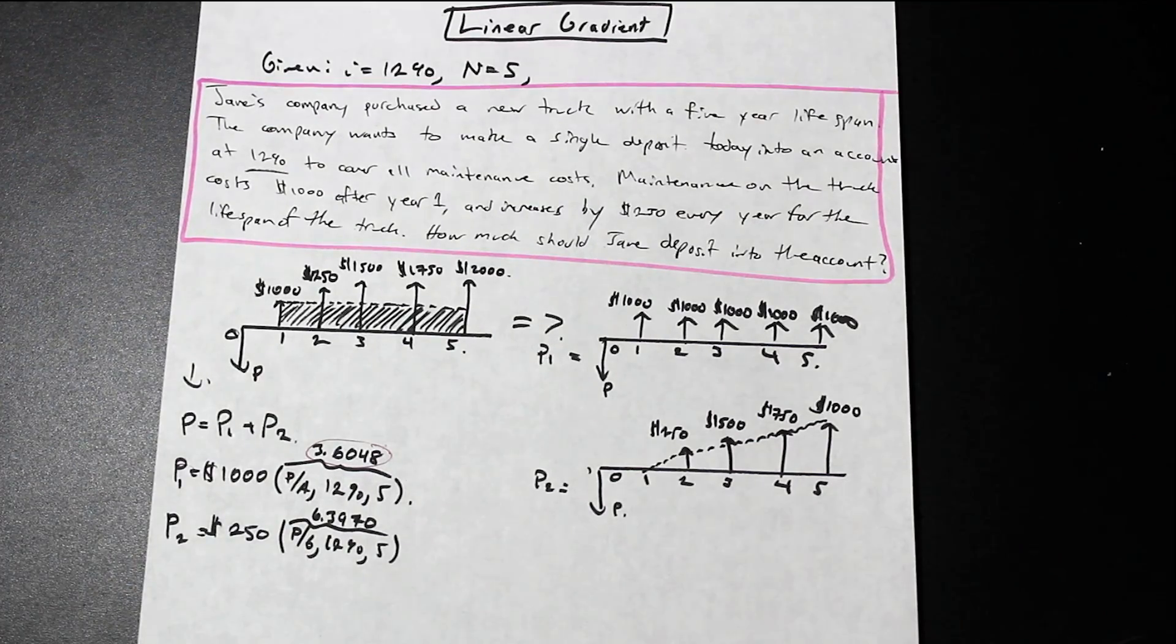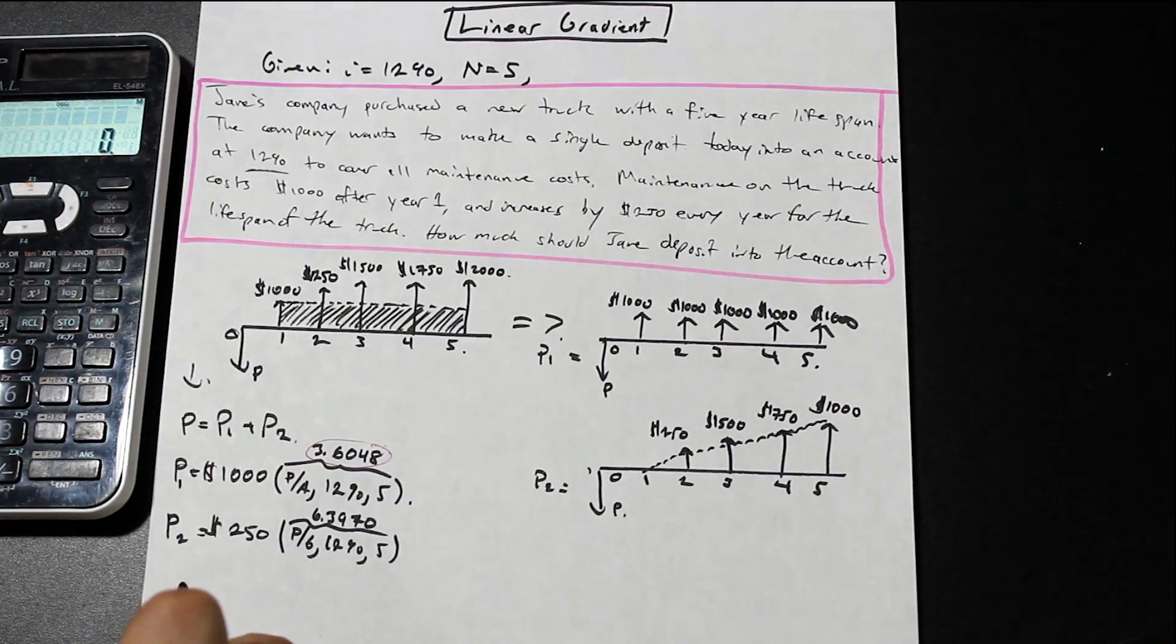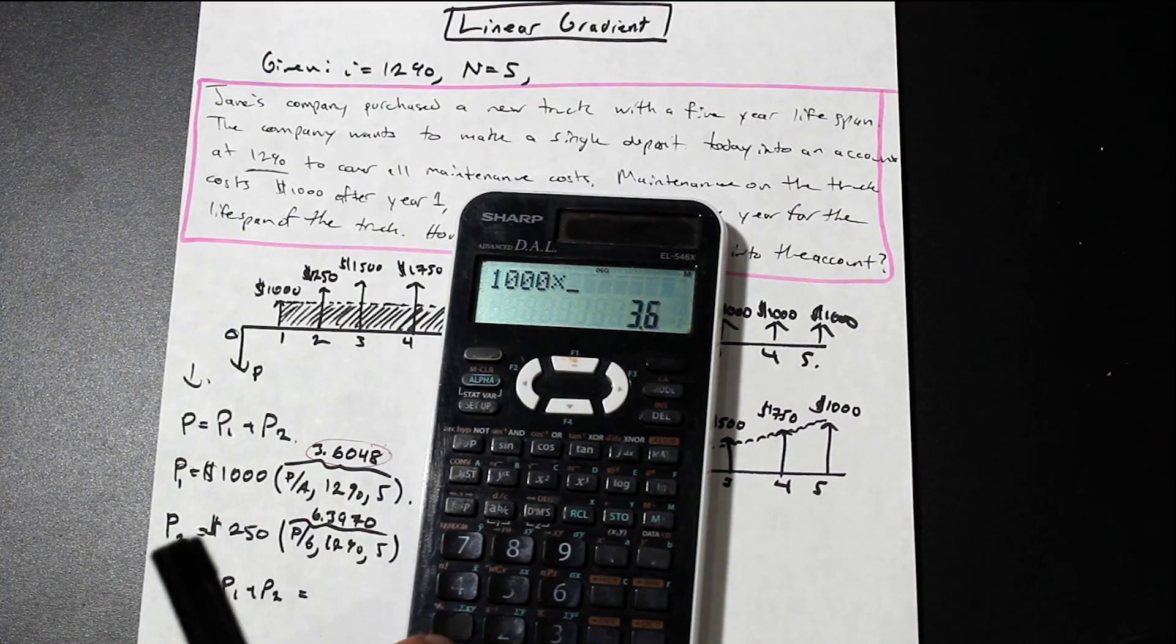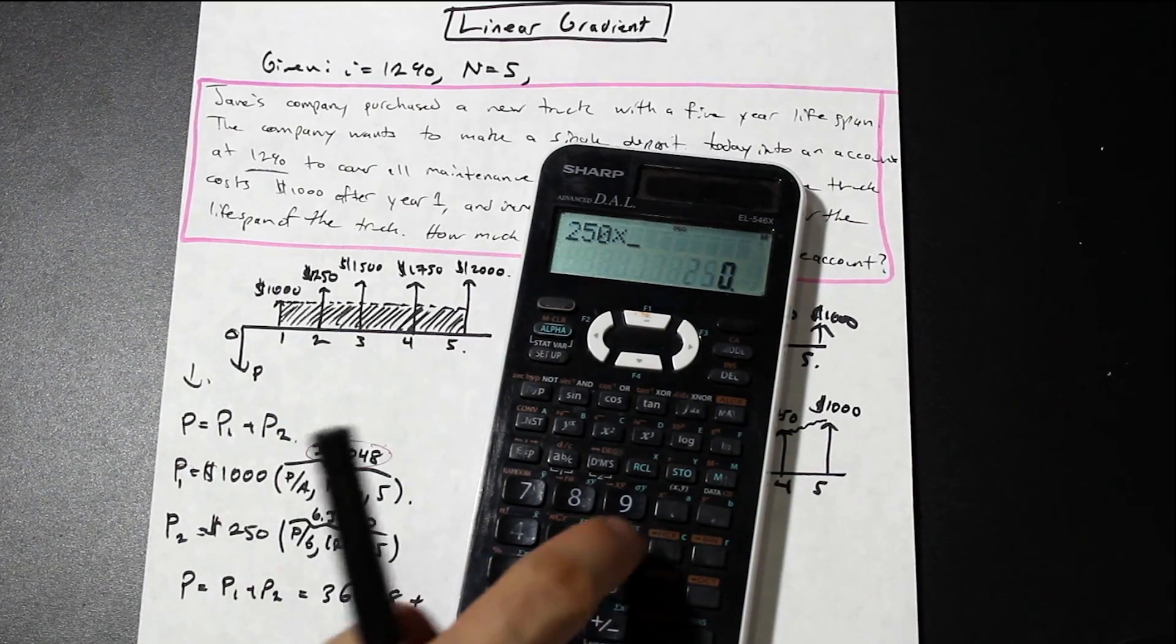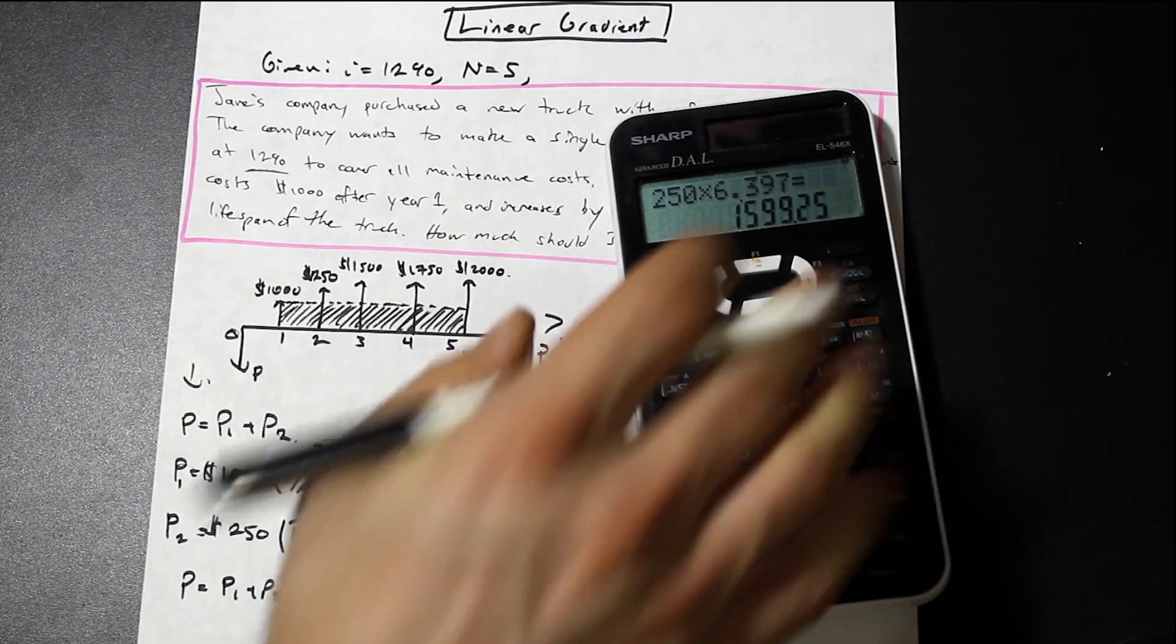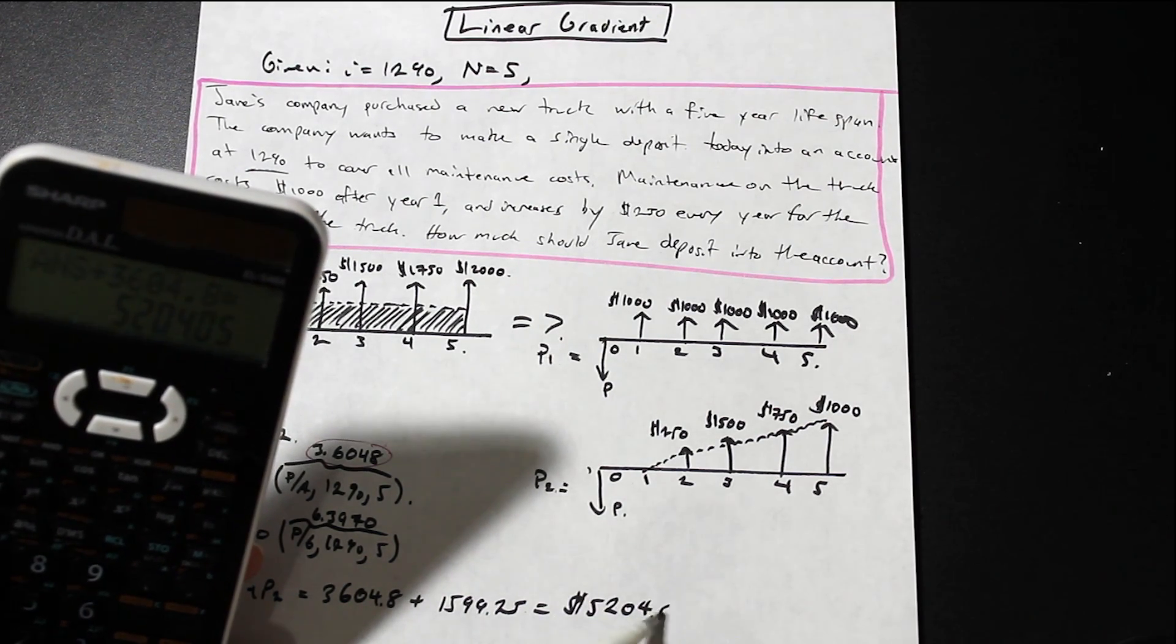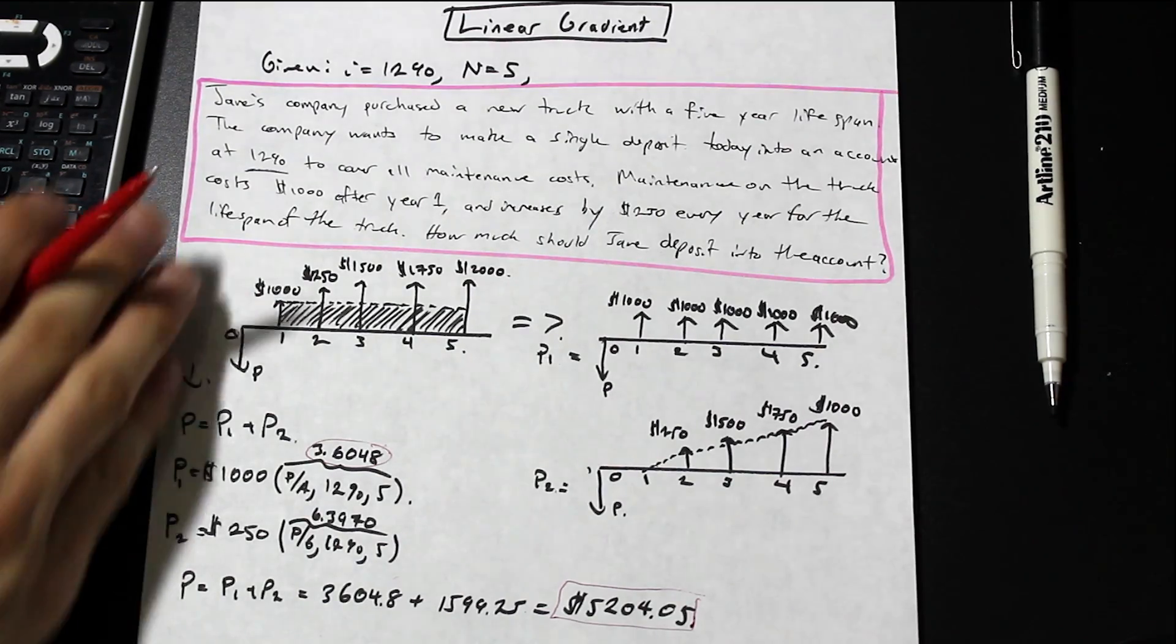So if we just go ahead and plug these values in. So we're going to say that P equals P1 plus P2, equals 1,000 times 3.6048. So we have 3604.8 plus P2, which is going to be 250 times 6.397. That's going to give us 1599.25. And that means that P is equal to $5,204.05. So that is how much that Jane's company, or Jane, must deposit into her account today in order to cover all the maintenance costs throughout the lifetime of the truck.